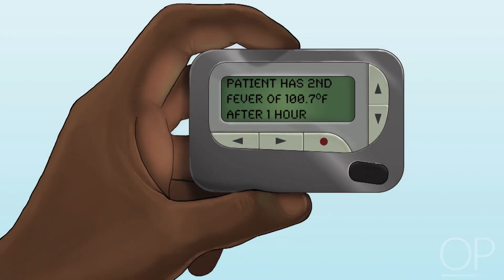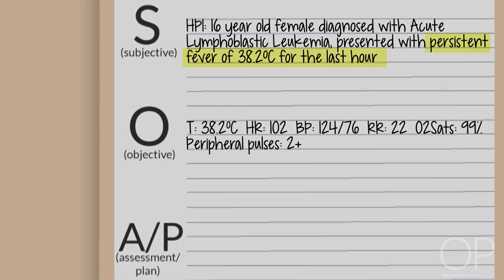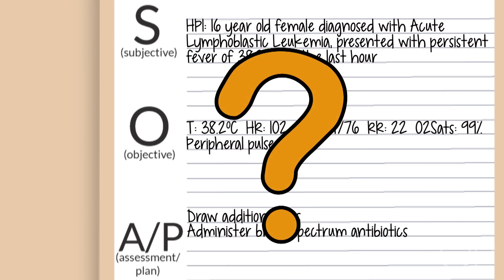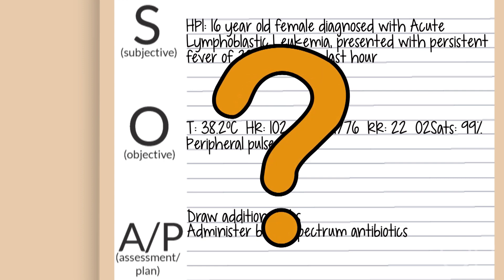Now you receive a page that the same patient has a second fever to 100.7, a little over an hour after the last fever. Now what do we do? Because the patient has a persistent temperature greater than 38 degrees Celsius for over an hour, we would officially consider this patient to have both fever and neutropenia. Additional labs should be drawn and broad-spectrum antibiotics initiated. But how should you choose what antibiotics to start and what labs and studies to order?